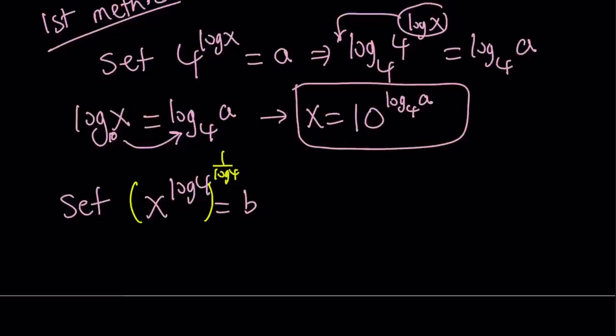Alright. So if you do that, the log 4 is going to cancel out. You're going to end up with the following. Let's clean it up and rewrite it: x equals b^(1/log 4). And this is base 10 log 4.